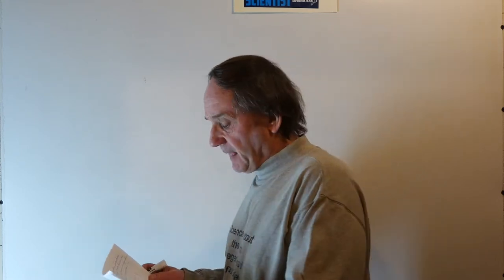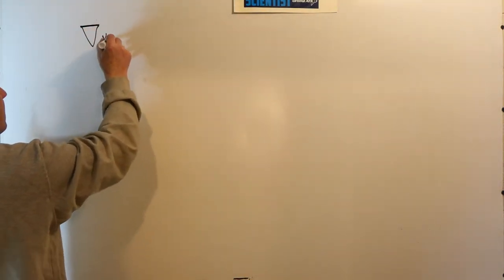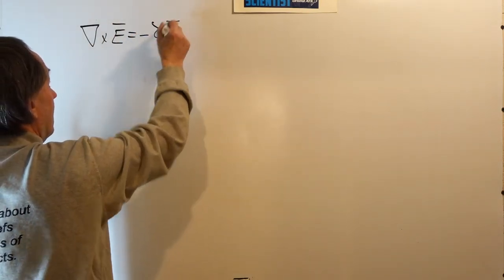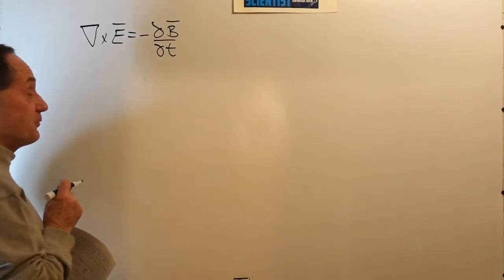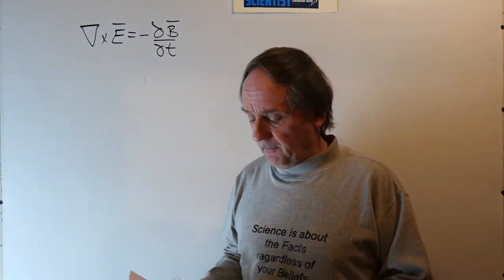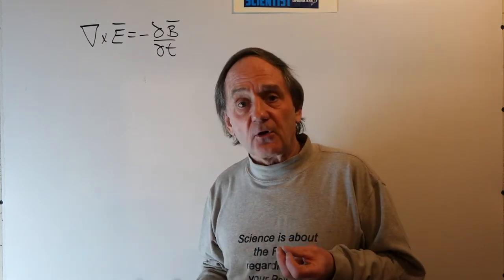Faraday's Law of Electromagnetic Induction is one of four Maxwell's equations that describe classical electrodynamics. The Maxwell equations are vector partial differential equations in space and time. The point form, or differential form, of Faraday's Law states that the curl of the electric field intensity E is equal to minus the partial derivative of the magnetic flux density with respect to time. The three other Maxwell equations are Ampere's circuit law, Gauss's law, and the equation that tells us there are no naturally occurring magnetic monopoles.